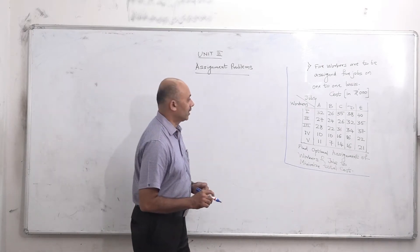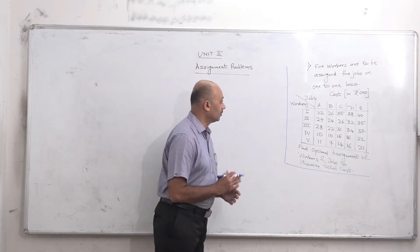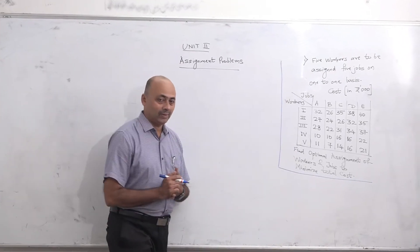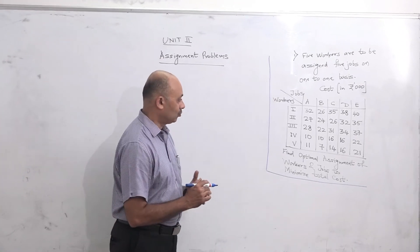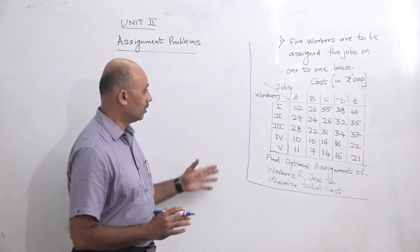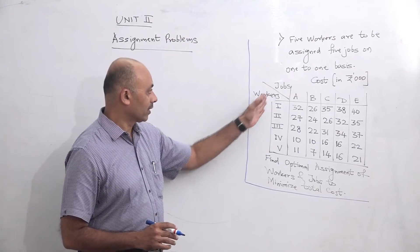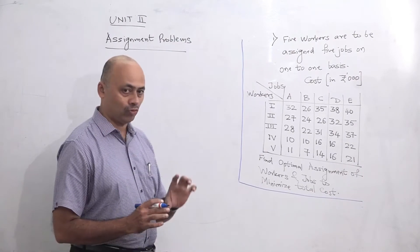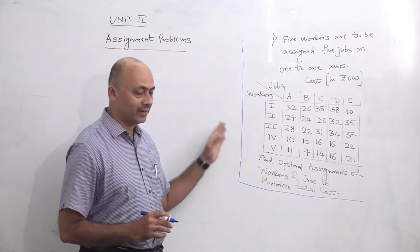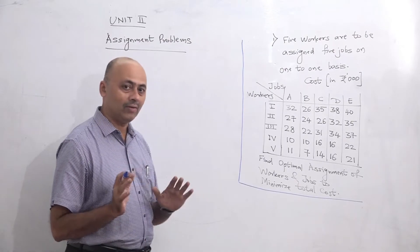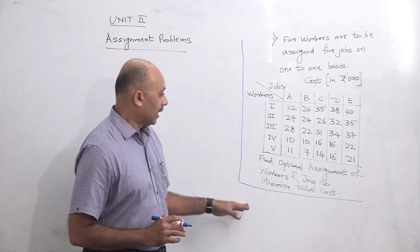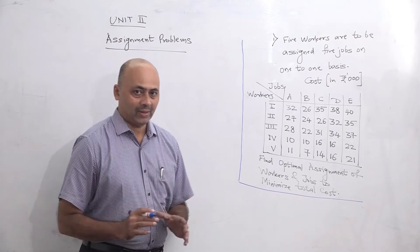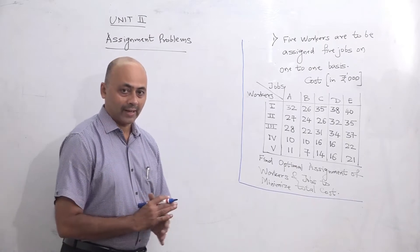Today we are going to solve assignment problems; this is unit number 2. Assignment problems are based on 1-to-1 allocation. There are two variables — workers and jobs — and we have to find assignment on a 1-to-1 basis, where one worker can perform only one job at a time. The method used for solving the assignment problem is called the Hungarian method.